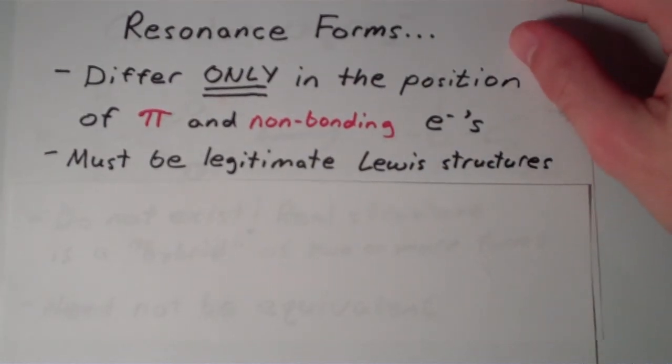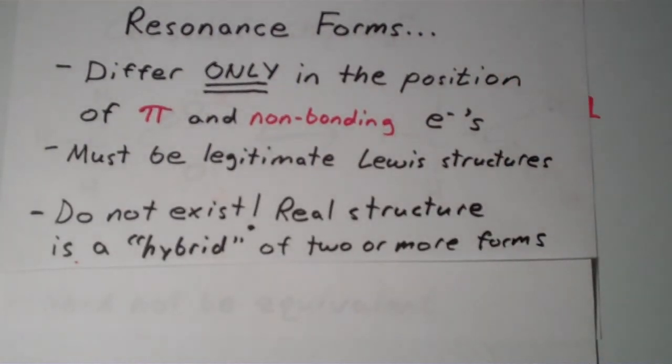A third tip about resonance structures is that, as I've said before with the acetate ion, resonance forms do not exist. They're fictional. They're not real. The real structure is a hybrid of two or more forms. So the real structure of acetate ion was a hybrid between those two resonance forms.